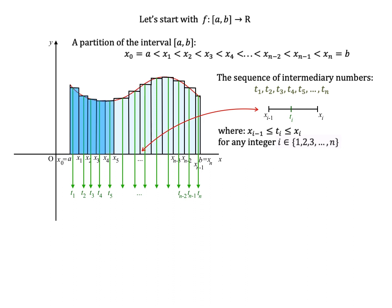Adding up all the surface area of these n rectangles will give us sum of n terms, which is sum of i equals 1 to n of f of ti times xi minus xi minus 1.